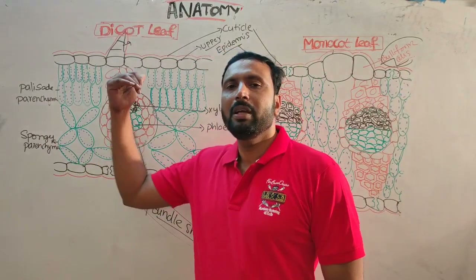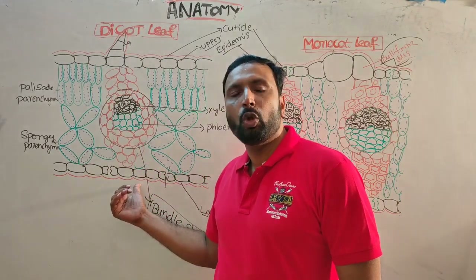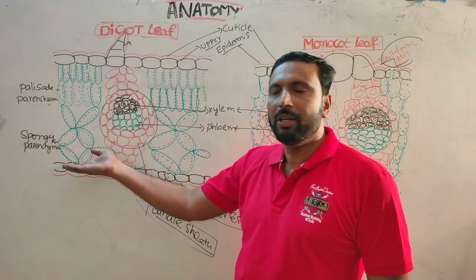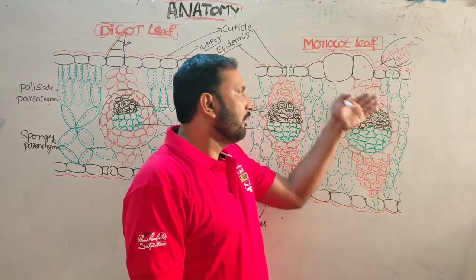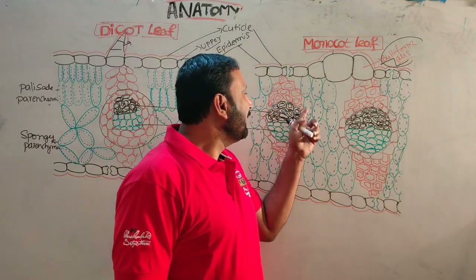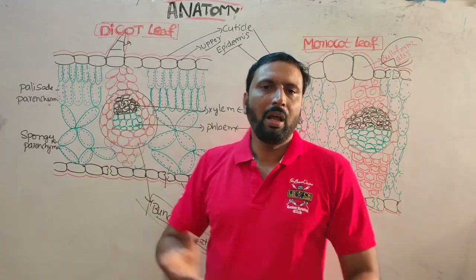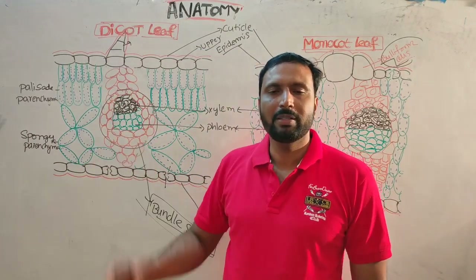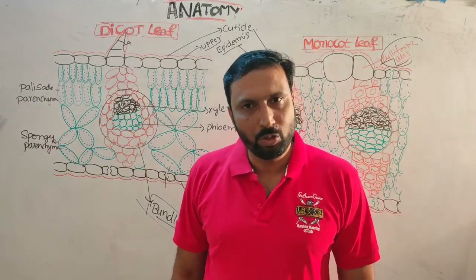For leaves: bulliform cells present in monocot, absent in dicot. Hair present in dicot, absent in monocot. Stomata mainly restricted to lower epidermis in dicot, equally distributed in monocot. Dicot leaf is dorsiventral with palisade parenchyma near upper epidermis and spongy parenchyma near lower epidermis. Monocot leaf has no such differentiation. Bundle sheath cells are sclerenchyma in monocot, parenchyma in dicot. Both have conjoint collateral closed vascular bundles. This completes the quick revision on plant anatomy. Thank you.